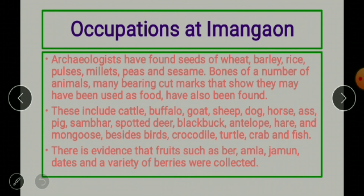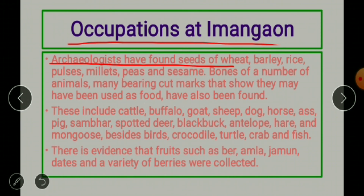Now let's look at the occupations at Inamgaon. Archaeologists have found seeds of wheat, barley, rice, pulses, millets, peas, and sesame. Bones of a number of animals, many bearing cut marks showing they may have been used as food, have also been found.